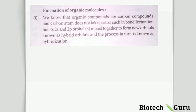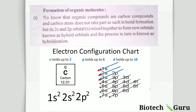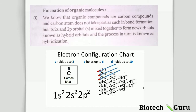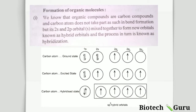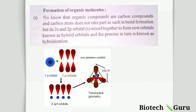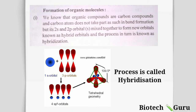The process of mixing orbitals is known as hybridization. When two different orbitals mix, the result is called a hybrid orbital, and the process is called hybridization. In carbon's case, the 2s² orbital mixes with the 2p orbital to form new hybrid orbitals. This process is hybridization. Types of hybridization encountered in organic compounds are SP³, SP², and SP. So hybridization has three types: SP³, SP², and SP.